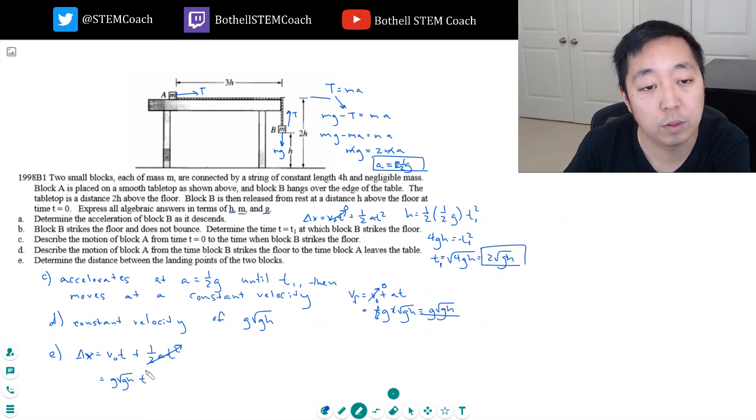So his velocity is root GH times T. Now, how long does it take for him to hit the ground? This T is not the same as T1 because T1 represents when this guy hits the ground, but now that he's in the air, he's going to go flying and we've got to see when he hits the ground. The time he's in the air can be given by, in the Y direction, based on how far he's going to fall here. So delta Y equals V naught T plus one half AT squared. In the vertical direction, he has no initial vertical velocity.